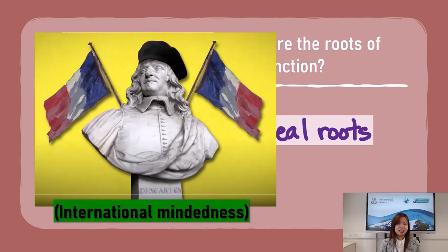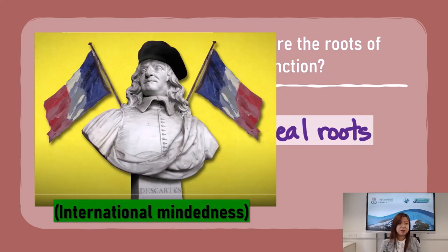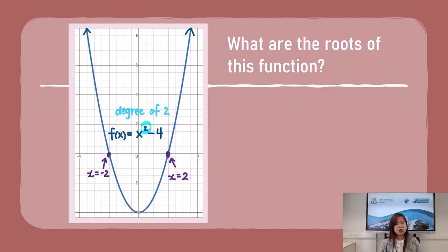However, an element of international mindedness: Descartes, a French mathematician in the 17th century, said that all geometric problems could be solved algebraically and vice versa. So let's take a look at our problem again. We already found this answer visually. To solve this algebraically, we set x² - 4 = 0. We move the 4 over, and to solve for x, we square root both sides. x = ±√4, and we simplify this to x = ±2, which aligns with our visual answer.